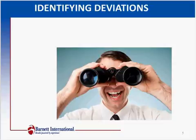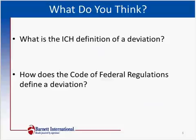So, identifying deviations — how do you know if you have a deviation to begin with? This is a very good question and we're going to answer it. Without looking at your handouts, what do you think the ICH definition of a deviation is? Responses coming in: 'not protocol compliant,' 'not following protocol.' Yes — that's a pretty good high-level ICH version.